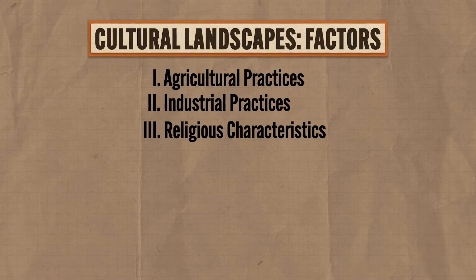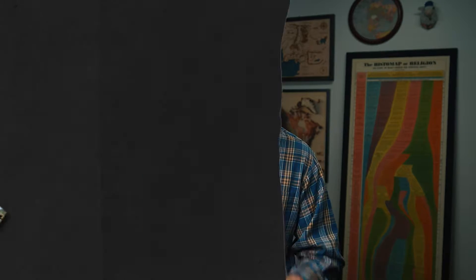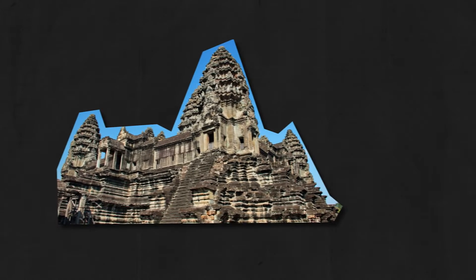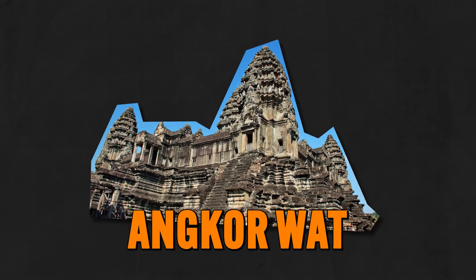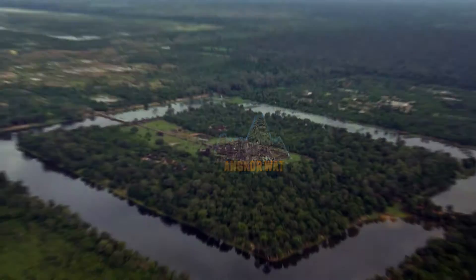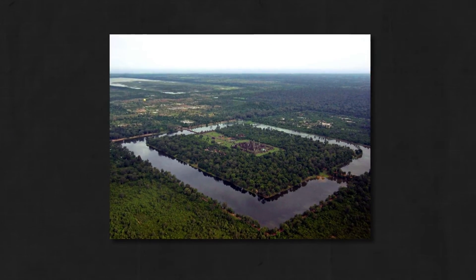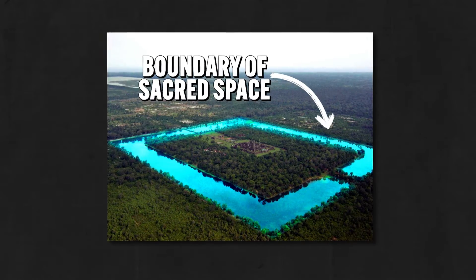A third factor for evaluating cultural landscapes includes religious characteristics. People in most religions construct buildings which reflect their faith and create sacred spaces in the landscape. For example, this is the majestic Hindu-Buddhist temple called Angkor Wat, located in Cambodia. Notice how this temple is fully separated from the surrounding area by a human-built moat. Not only does it help regulate the groundwater on the island, but it's also a symbolic barrier that communicates that this land is special and set apart.